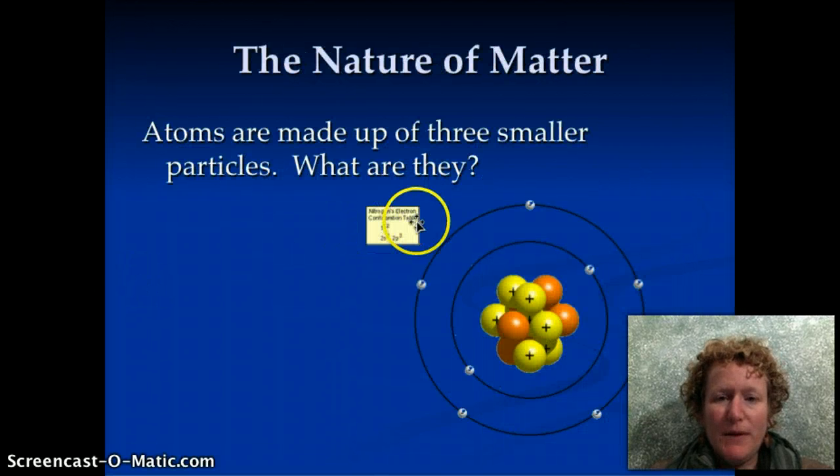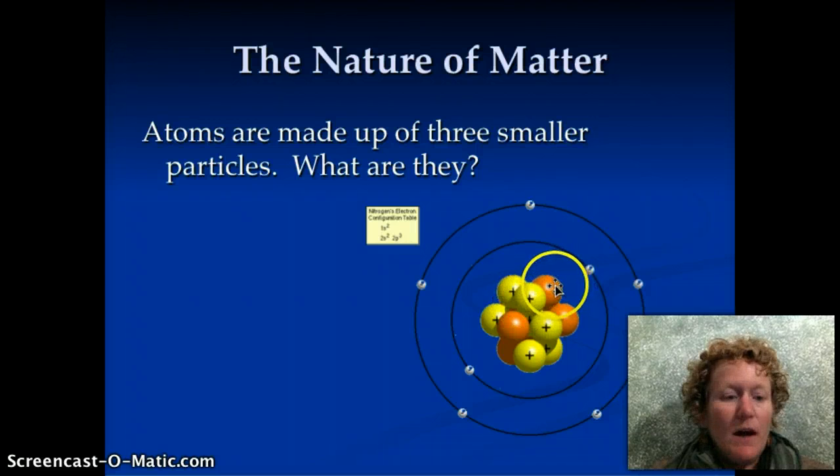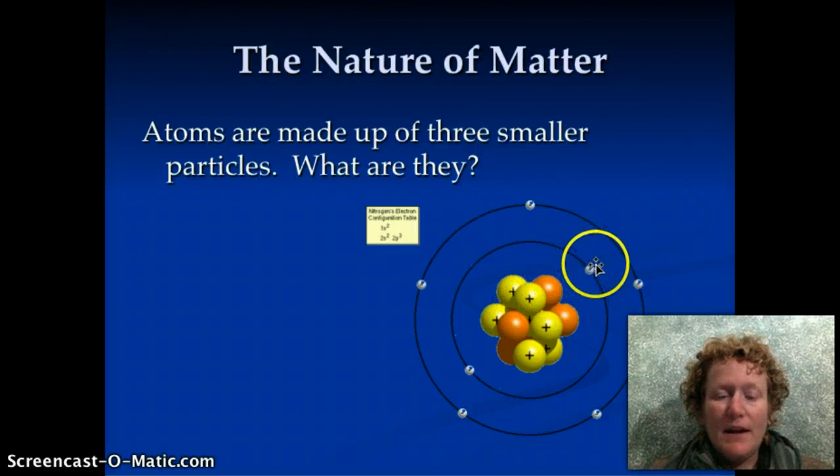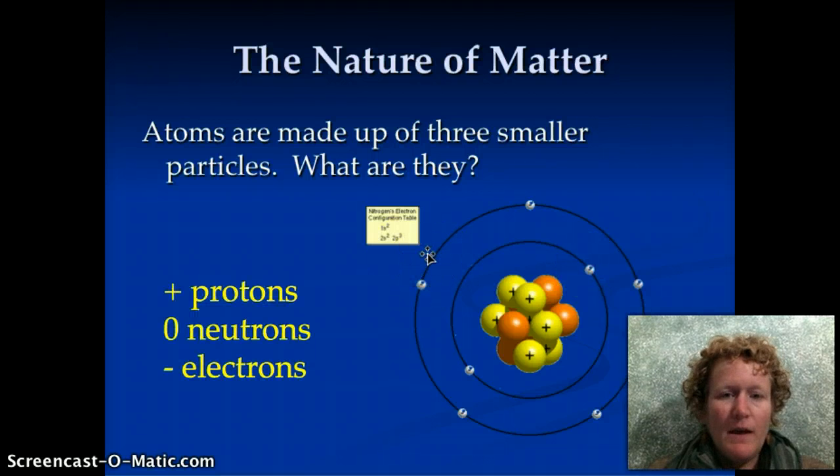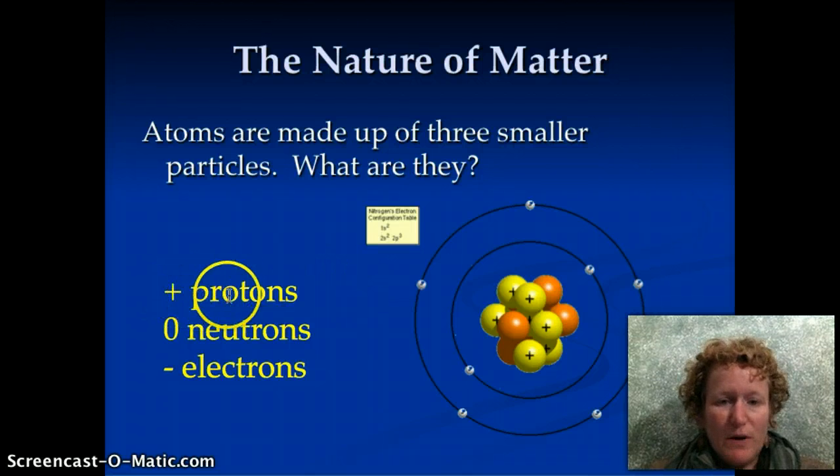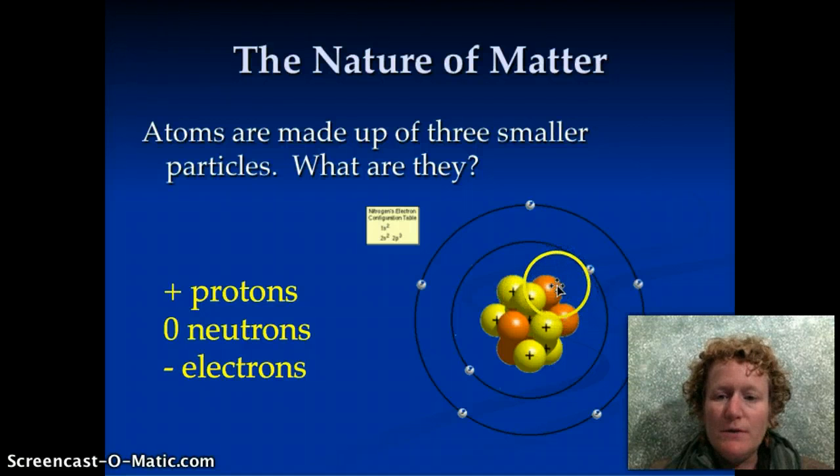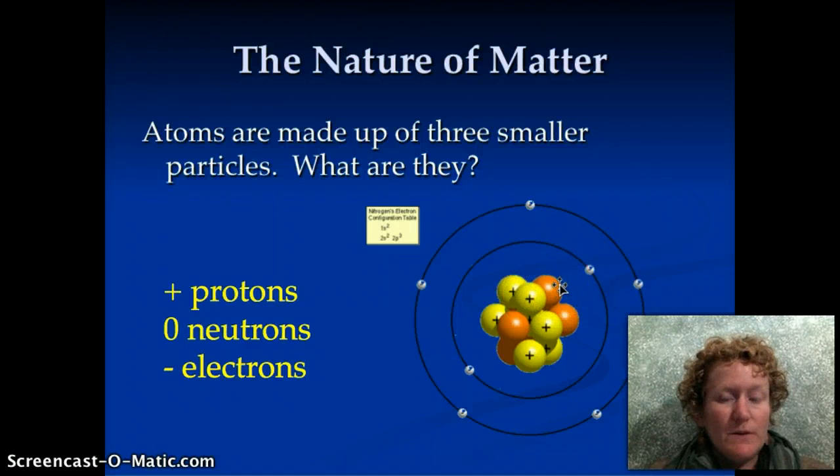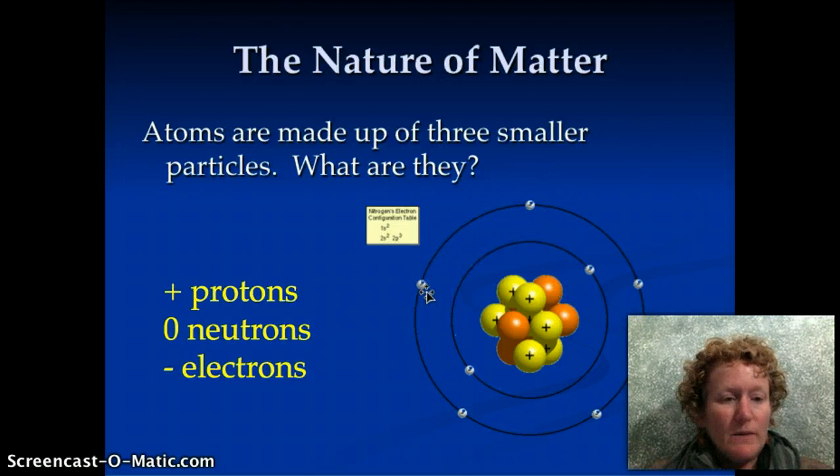Atoms are made of three smaller particles. You can see them here. They have a positive charge, a neutral charge, and a negative charge. Can you remember? You're right! The positive charge is protons, they're in the nucleus. The neutral charge is neutrons, they're also in the nucleus. And the negative charge is the electrons, which orbit outside the nucleus.